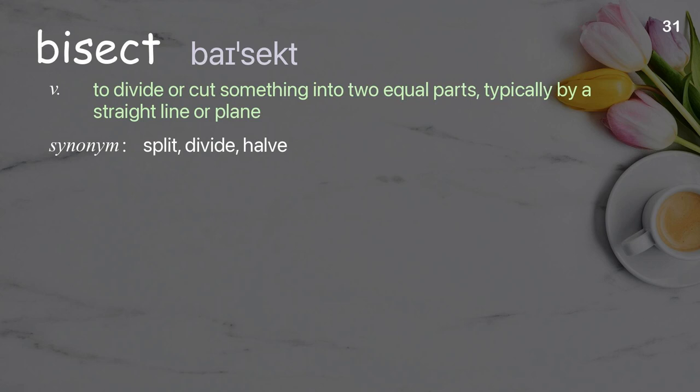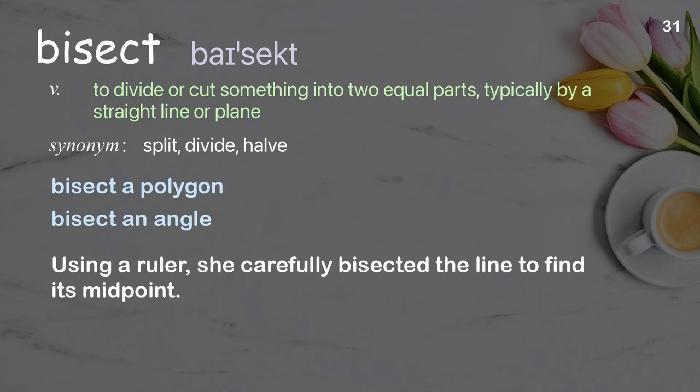Bisect: to divide or cut something into two equal parts, typically by a straight line or plane. Examples: bisect a polygon, bisect an angle. Using a ruler, she carefully bisected the line to find its midpoint.